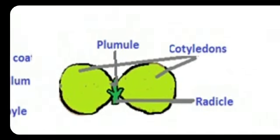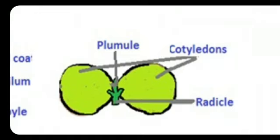You can easily see radicle and plumule. A plant has two parts: one part we can easily see is the aerial part — the part that is in the air — which we call the shoot system. The other part is the underground part, under the soil, which we call the root system. These two systems develop from the radicle and plumule present inside the seed.